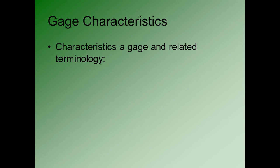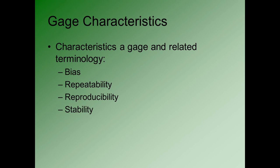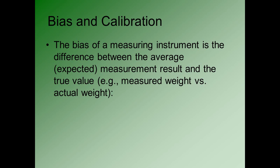The gauge characteristics we're going to be talking about, and the related terminology, are as follows: bias, repeatability, reproducibility, stability, and finally linearity. I'm now going to talk about each of these terms, starting with bias and the related idea of calibration.